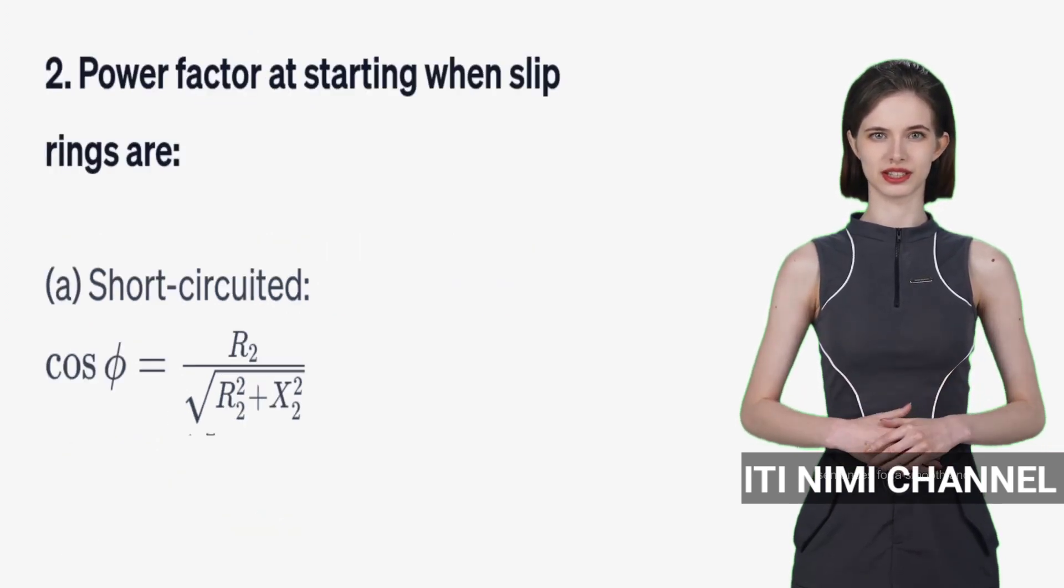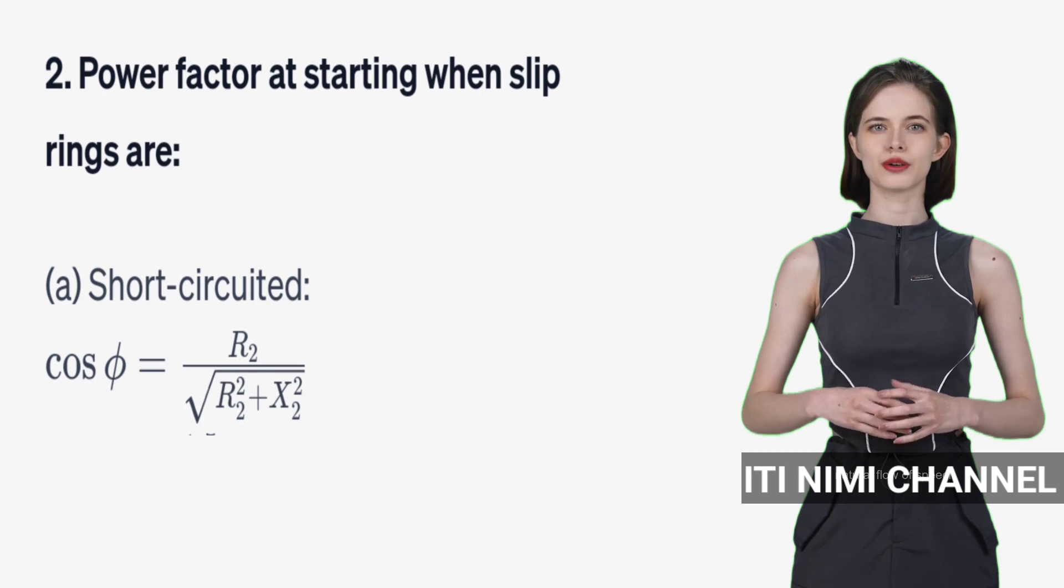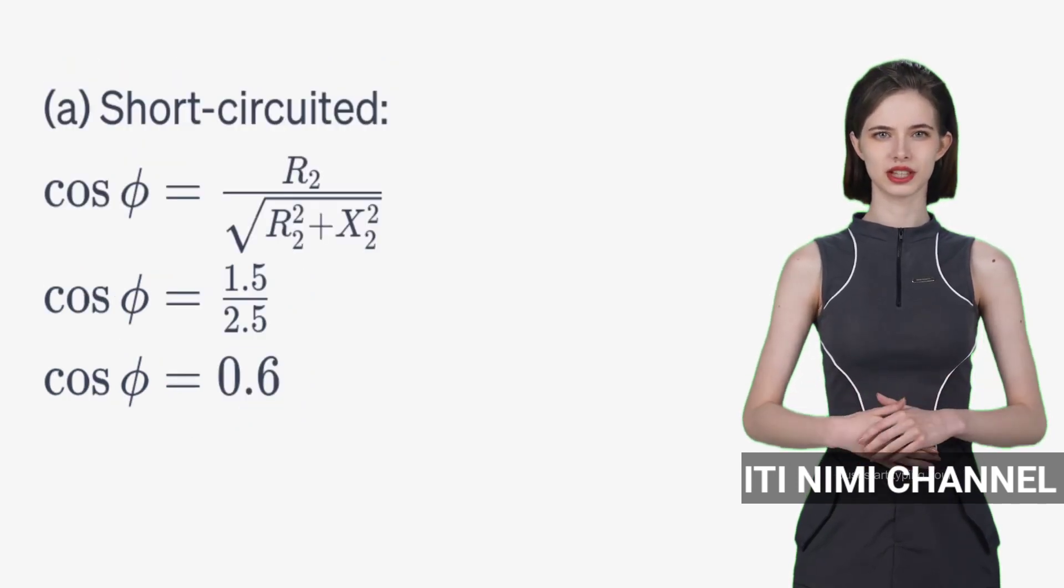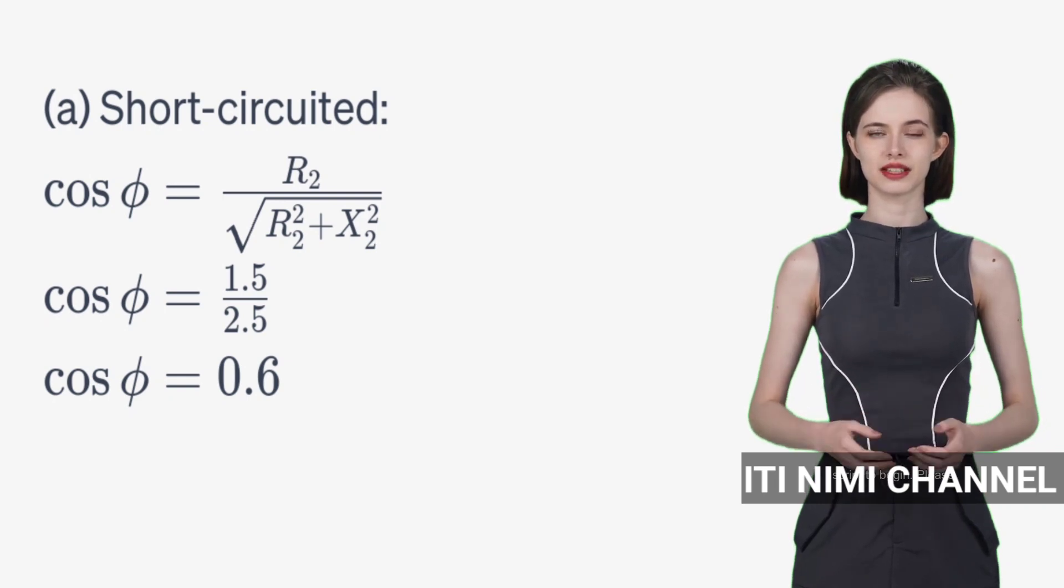Next, we will determine the power factor at starting. When the slip rings are short-circuited, the power factor is 0.6 which means it's lagging.